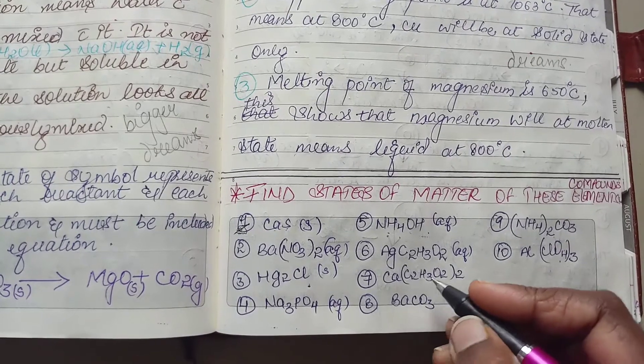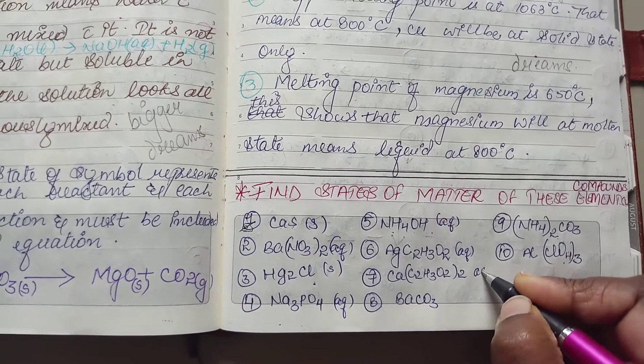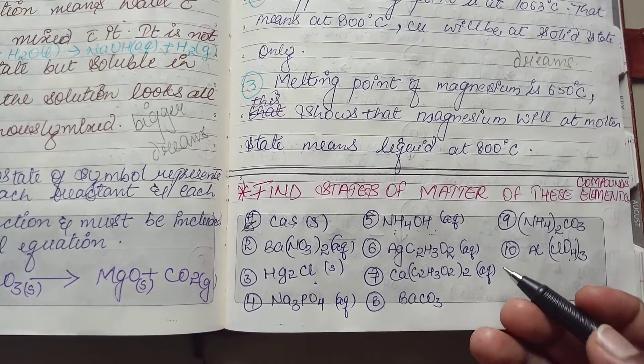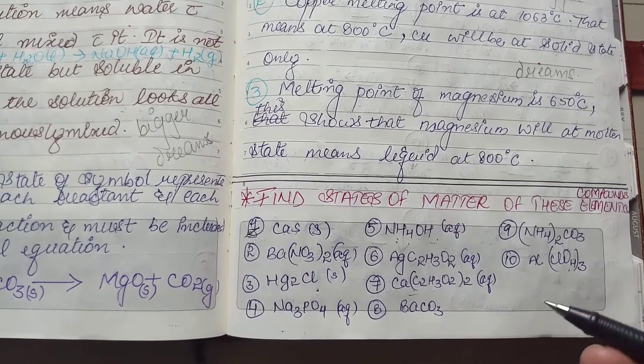Now, there is again calcium acetate. So, calcium acetate is also going to be aqueous because there is no exception like I said. So, as acetate is soluble in nature, this compound is also going to dissolve in water.